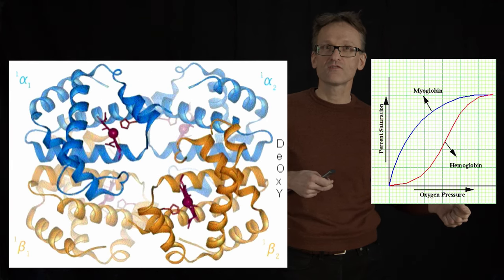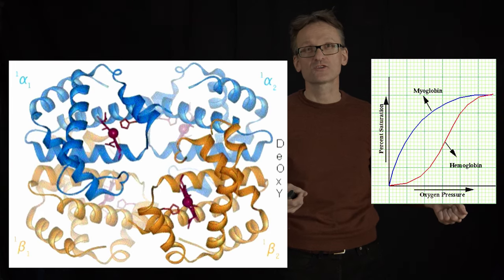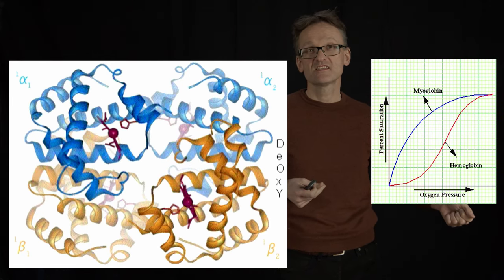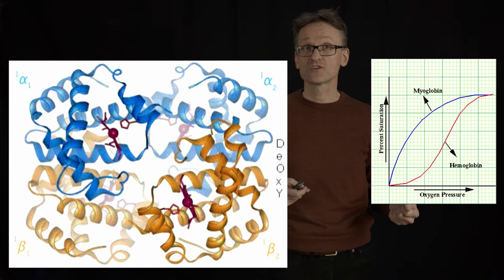When the partial pressure of oxygen is quite high, that is in my lungs, it's going to be great at taking up extra oxygen. But this has then been transported out to the muscle cells where the partial pressure of oxygen is low.